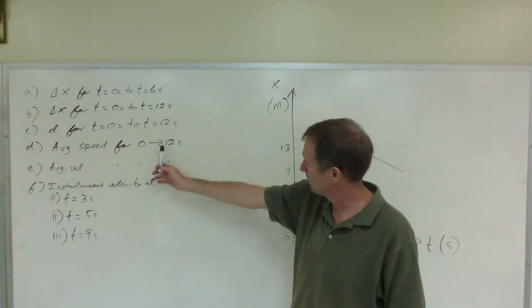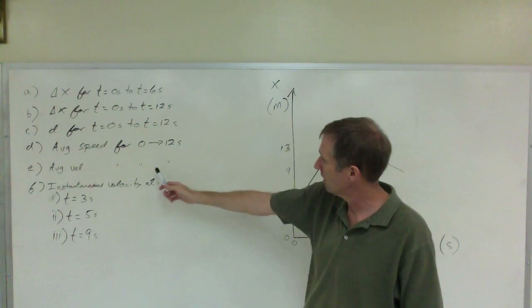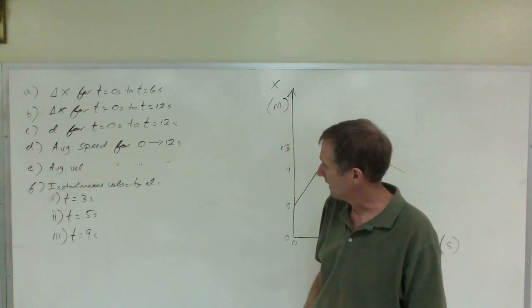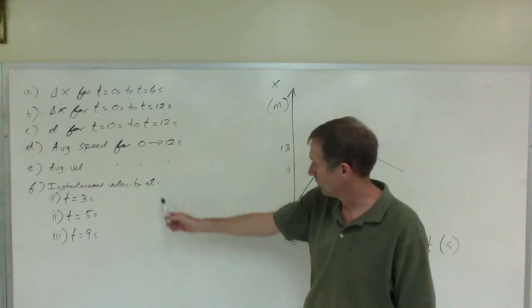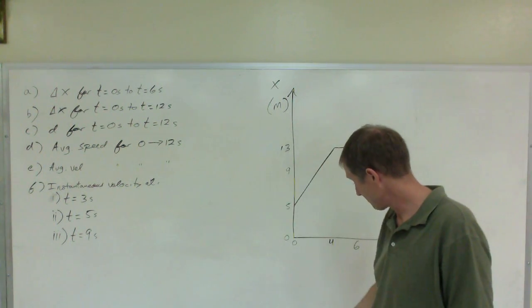Part d asks for its average speed over the interval. Part e is average velocity. And then we'll find the instantaneous velocities.